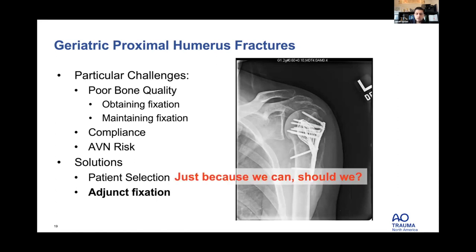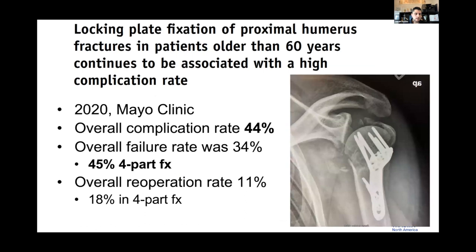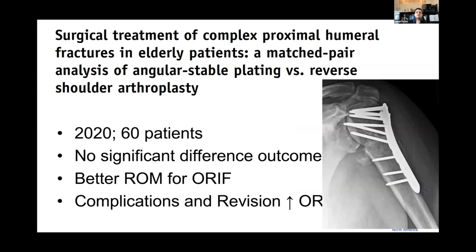A study from Mayo of patients over 60 found a complication rate up to 44 percent; for three- and four-part fractures specifically, 45 percent complication rate in patients over 60, with a quite high reoperation rate. Several RCTs compare reverse shoulder arthroplasty versus plating in older patients. One from 2020 showed no difference in overall outcome but better range of motion in healed ORIF, with much higher complication and revision rates for ORIF.